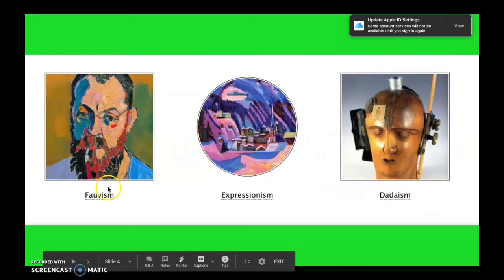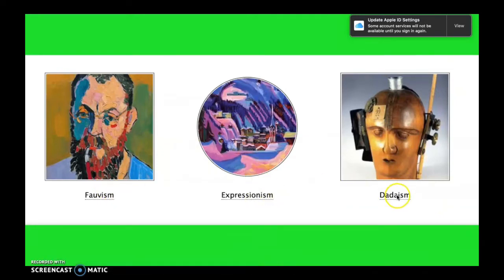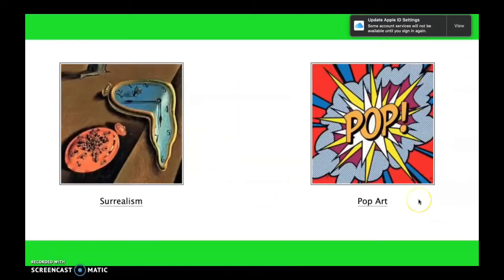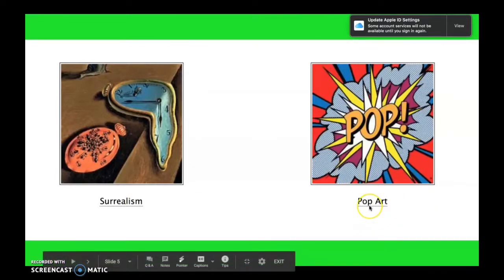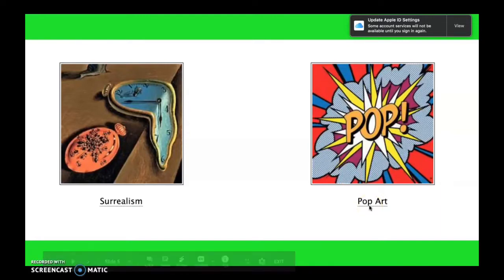You'll also see Fauvism, Expressionism, Dadaism, and then the last two — Surrealism and Pop Art. If you click on any of those, it will give you some examples and explanations of what the movement was about.